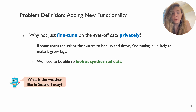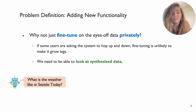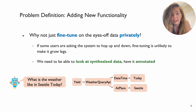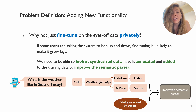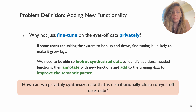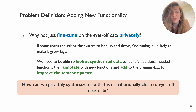What we need to do is be able to look at some synthesized proxy data which simulates the user data — for example, 'what is the weather in Seattle today?' — have it annotated, add functionalities, and then add this annotated data back to the training data of the parser to improve its performance. The question we answer is: how can we privately synthesize data that is distributionally close to the user data and can be used to improve the parser in this way?